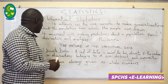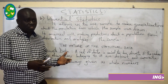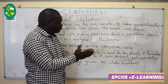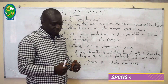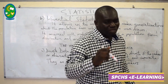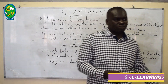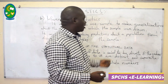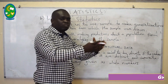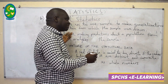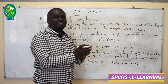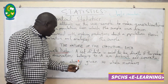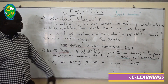For example, if you need to find the total number of students in a school, you can start with Form 1A — count maybe 40 students. Form 1B maybe 45. Then for Form 1C and other classes, you can just predict. That prediction falls under inferential statistics. Now let's move directly to the nature of statistical data, which we can also call types of statistical data.